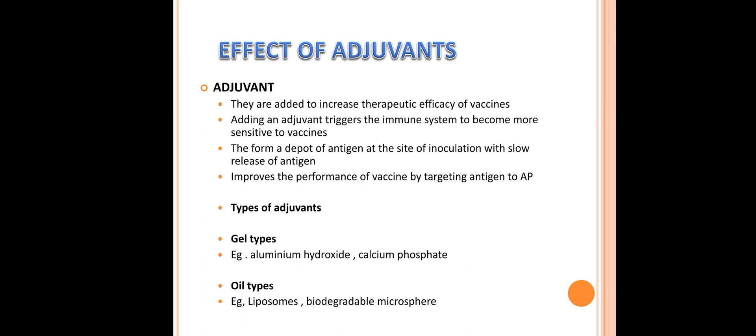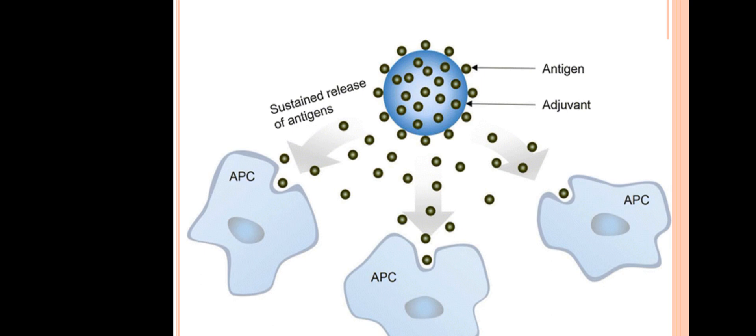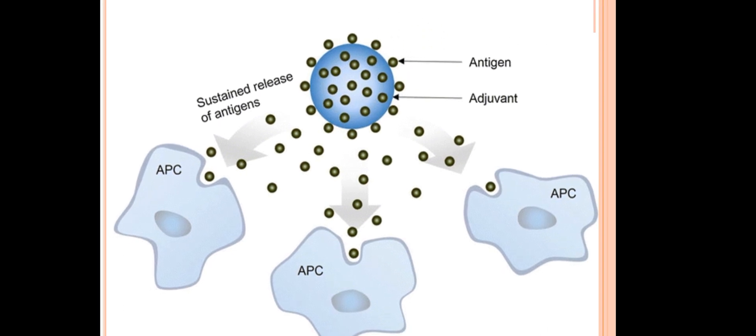Adjuvants are added to increase the therapeutic efficacy of vaccines. Adding an adjuvant triggers the immune system to become more sensitive to the vaccine. They form a depot of antigen at the site of inoculation with slow release of antigen, and improve vaccine performance by targeting the antigen to the active pharmaceutical site. Two types of adjuvants are generally used: gel type, for example aluminum hydroxide and calcium phosphate; and oil type, which includes liposomes and biodegradable microspheres. The function of adjuvants is to deliver or release the vaccine to the antigen-presenting cells.